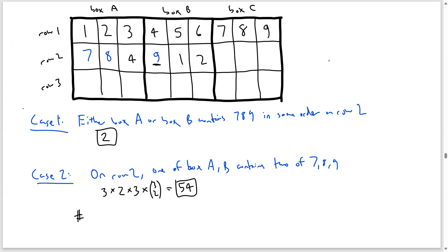So the total number of ways, assuming the top row is 1 through 9, is going to be 56, which is 2 plus 54. And then now we need to multiply by 3 factorial to the 6 to account for the ordering. And then multiply by 9 factorial to account for the first row numbers. And this is going to be the total number of ways to fill in the numbers.